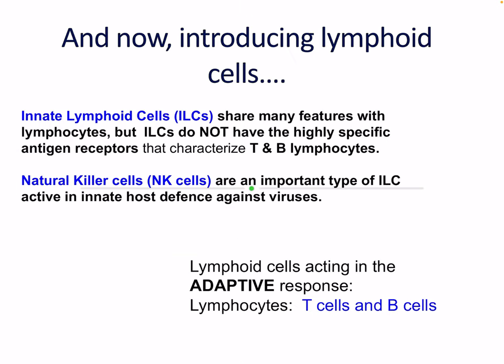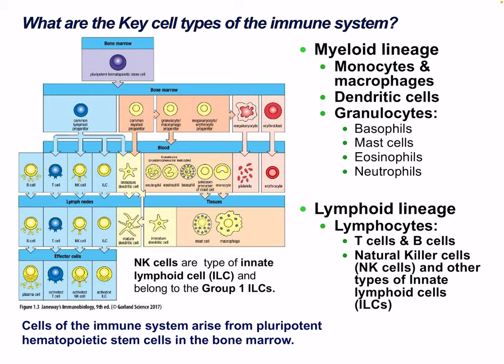Another type of innate cell, actually quite new in research, is the innate lymphoid cell (ILC). ILCs share many features of lymphocytes, but do not have highly specific antigen receptors that characterize T and B lymphocytes — so they're still classified as innate. Natural killer (NK) cells are an important type of ILC, active in innate host defense against viruses. NK cells are now classified as a type of ILC belonging to group 1. There are three groups: 1, 2, and 3, which we'll cover later.